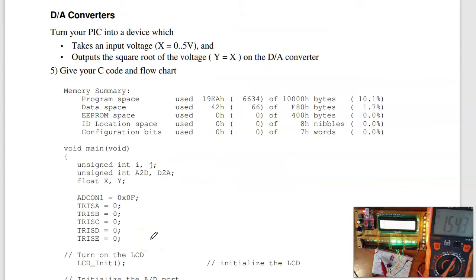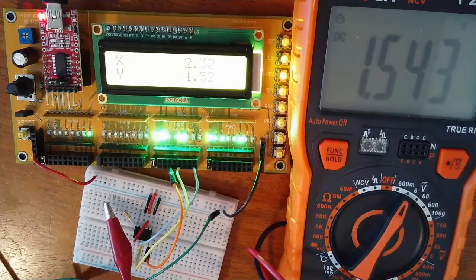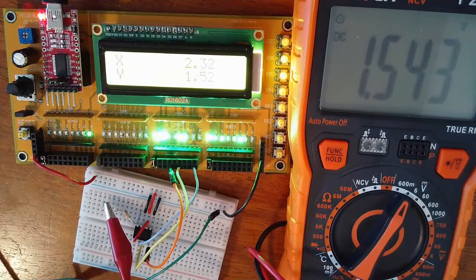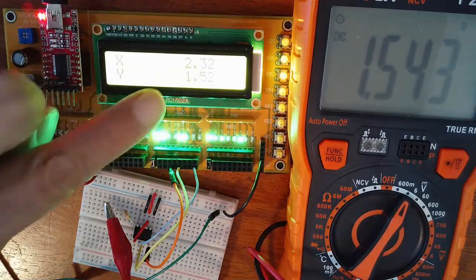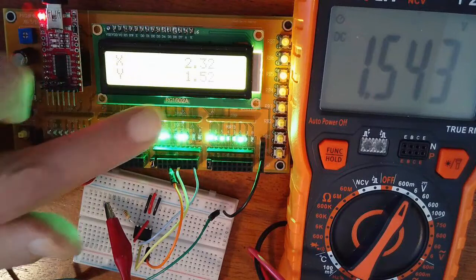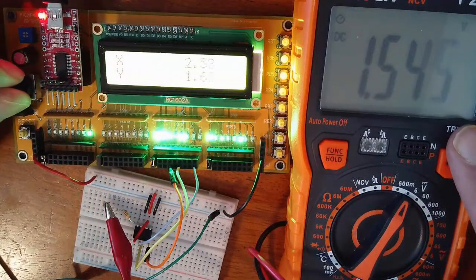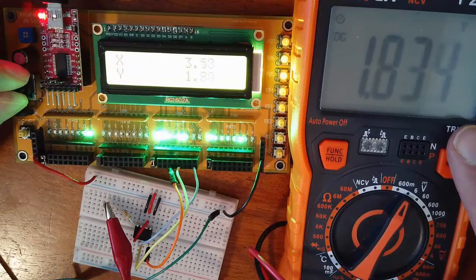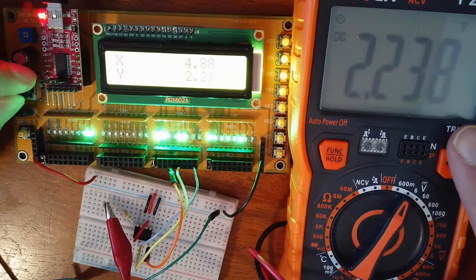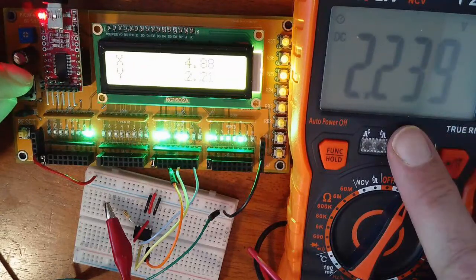Problem 5 is turn your pickboard into a square root function. So, I've got a voltage coming in. X goes 0 to 5 volts. The output is Y. Y is the square root of X. Come up with a program that does that. So, here's what it should look like. Here's the input voltage right here, 2.32 volts. Find the square root, 1.543. And here's the voltage going out. As I increase the input voltage at 4.88. This is the square root of 4.88.